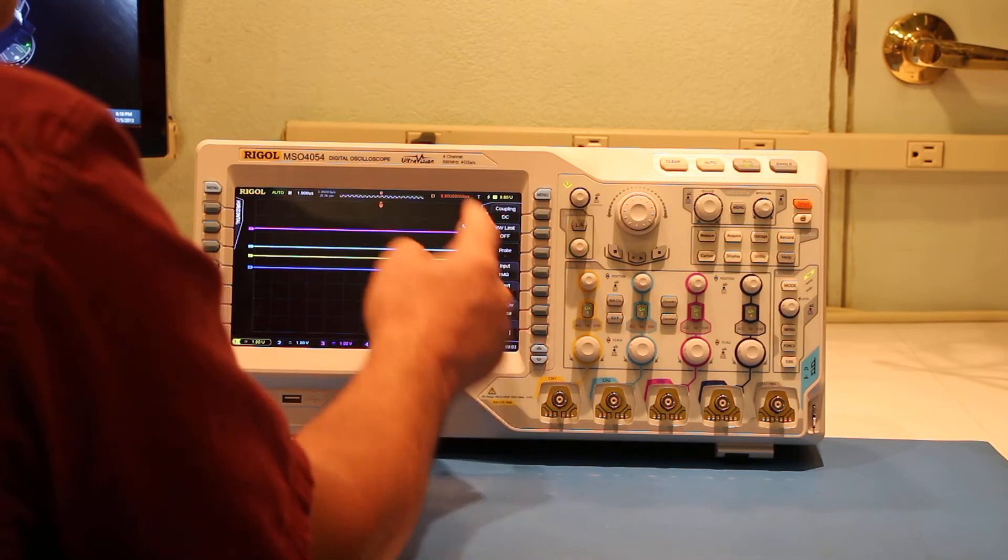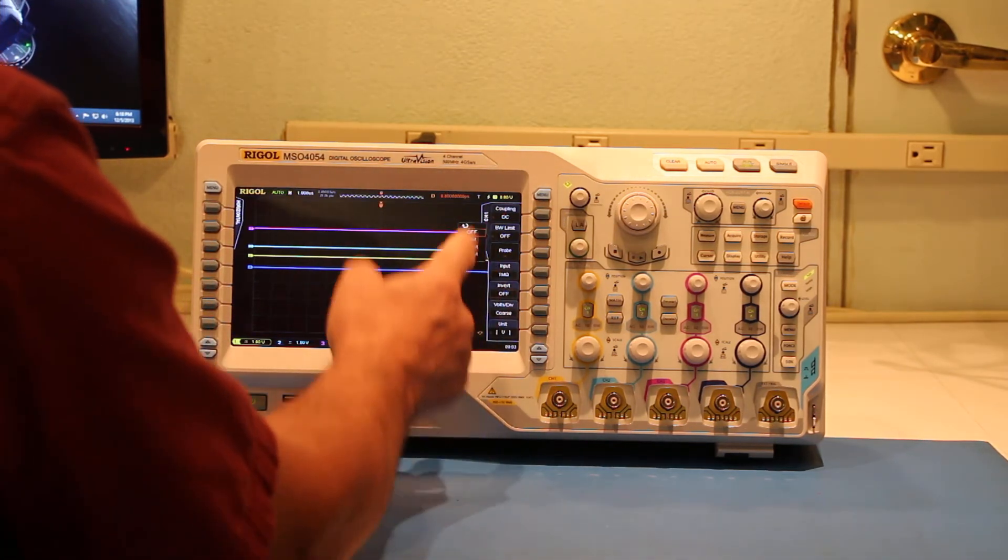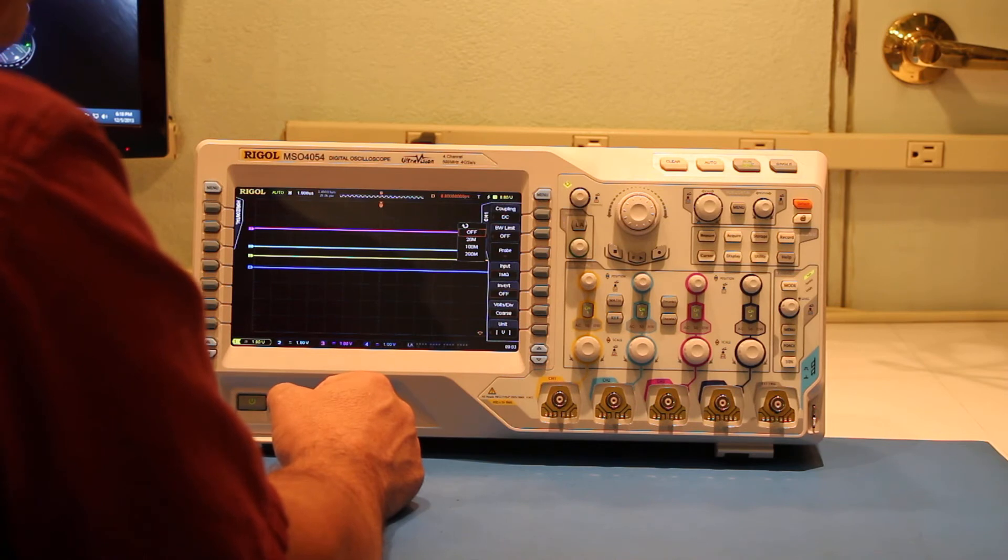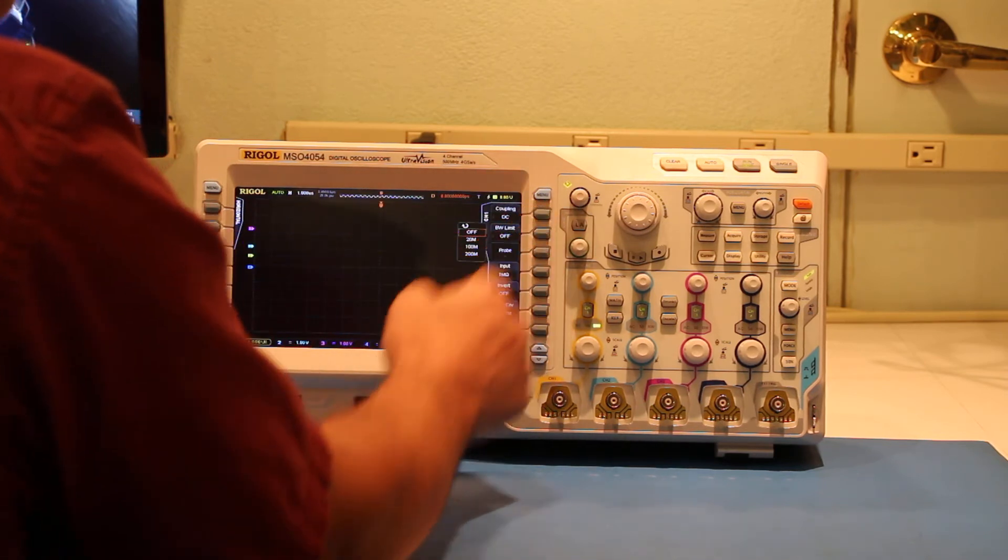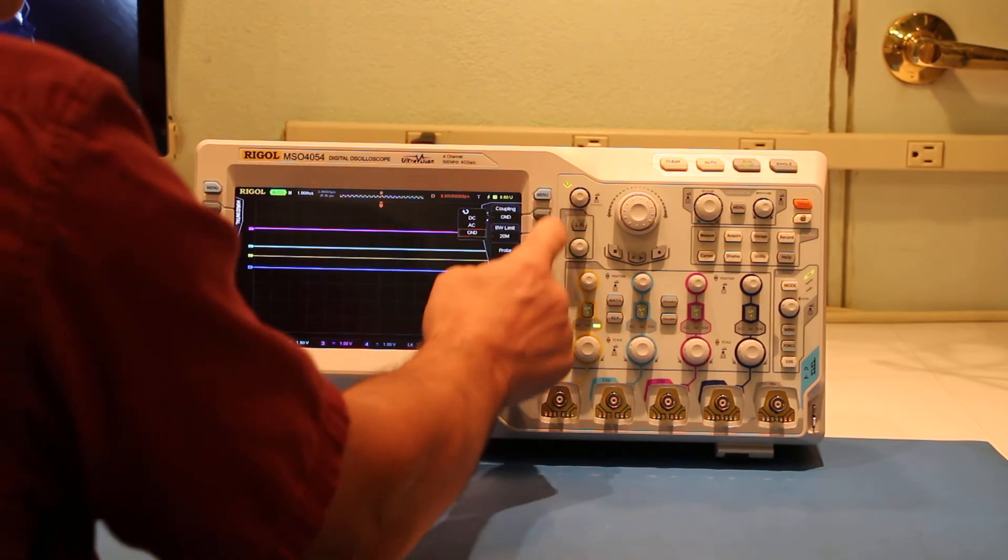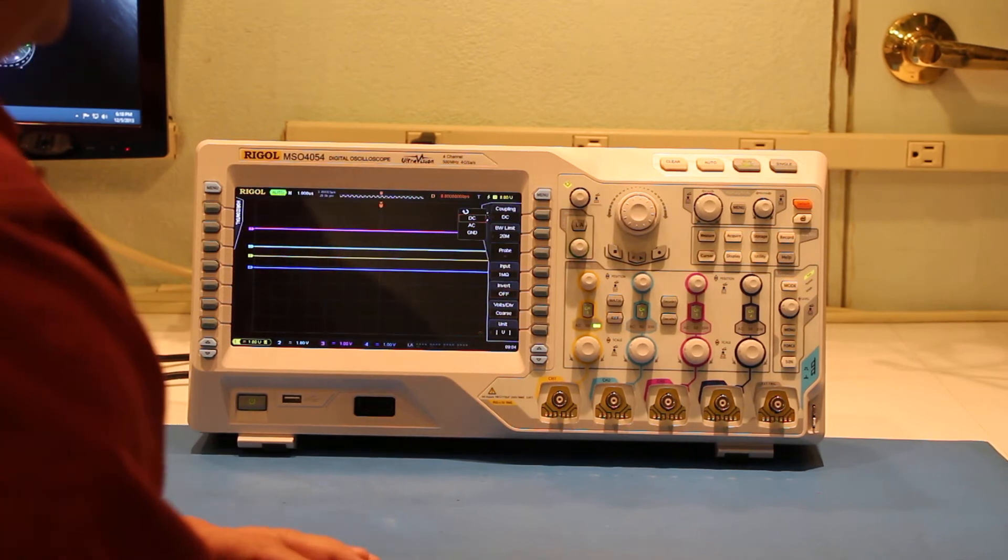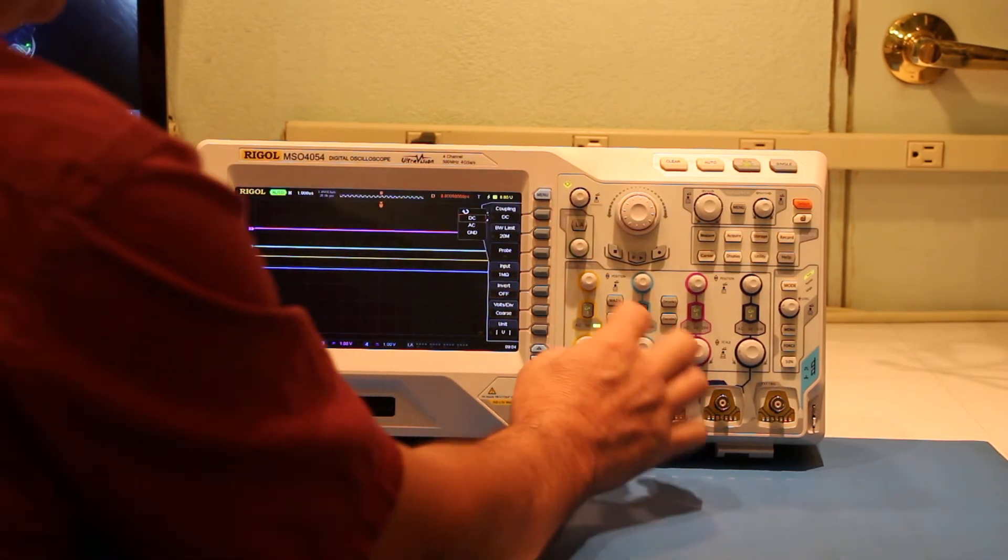It's got a bandwidth limit. Now this is a 500 megahertz oscilloscope, so we have the ability of selecting 20, 100, and 200 megahertz. Coupling can be AC, DC, or ground, and I think you'll find that that is very useful. Some of the new Agilent scopes I understand will not allow you to select ground. So that's the four input channels.